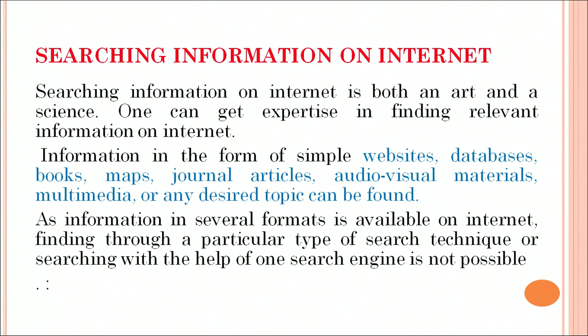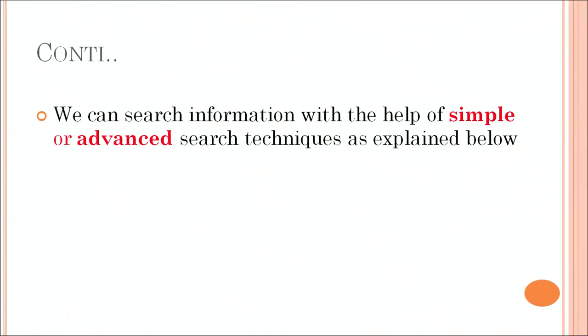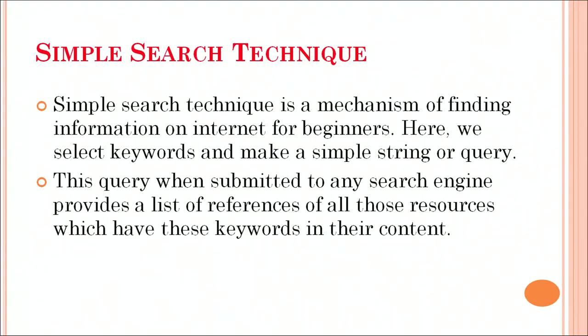As information in several formats is available on the internet, finding it through a particular search technique or one search engine alone is not possible. We can search information with the help of simple or advanced search techniques. The simple search technique is a mechanism of finding information on the internet for beginners. Here, we select keywords and make a simple string or a query. This query, when submitted to any search engine, provides a list of references of all those sources which have these keywords in their contents. These keywords may appear in any part of the document — title, body, text, or anywhere else.